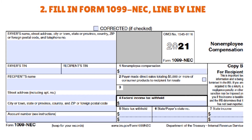Box four: you normally wouldn't withhold taxes from payments made to non-employees, but some individuals can be subject to backup withholding. You might receive a notice from the IRS telling you that a payee must pay backup withholding. The non-employee is required to certify in Part 2 of Form W-9 that they are not subject to backup withholding. Enter any amount of backup withholding you've made in box four.